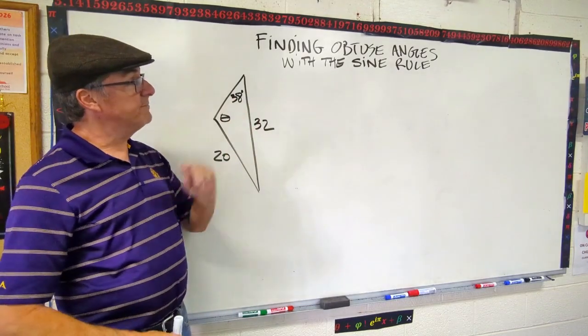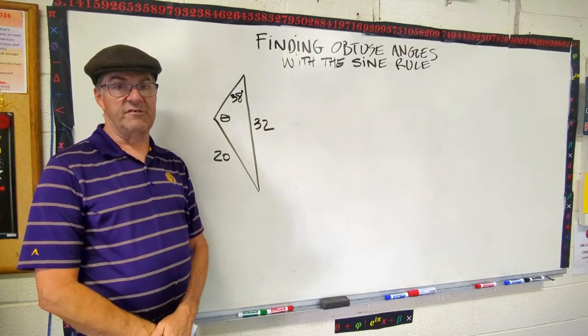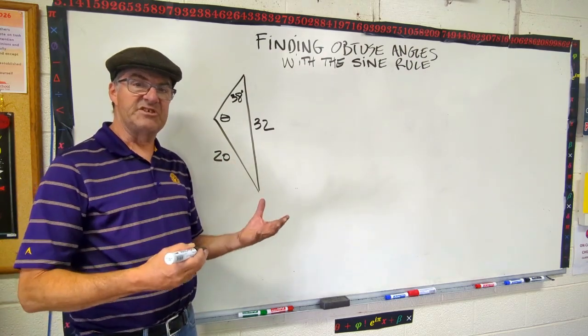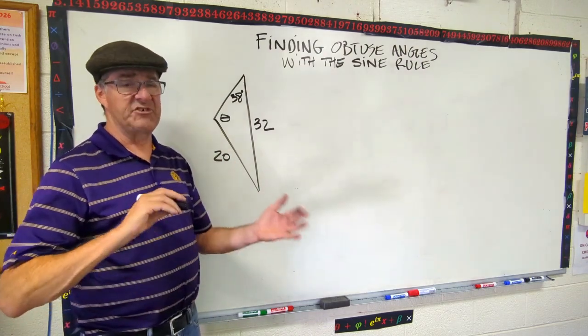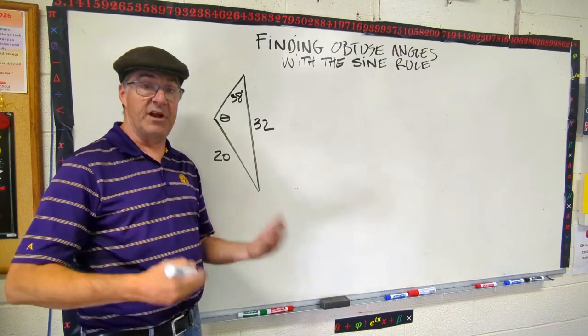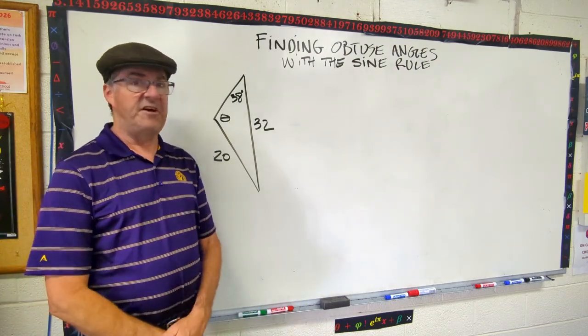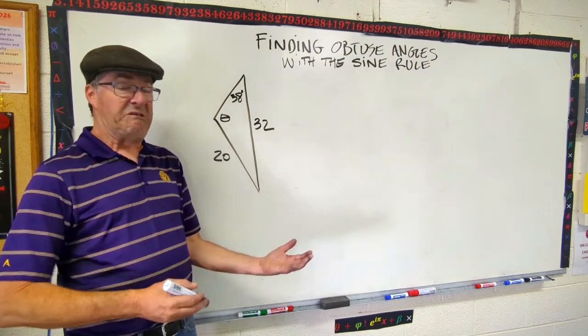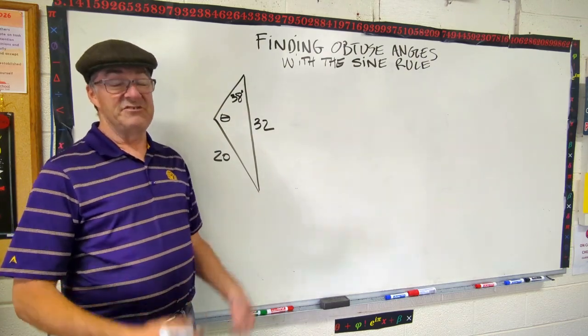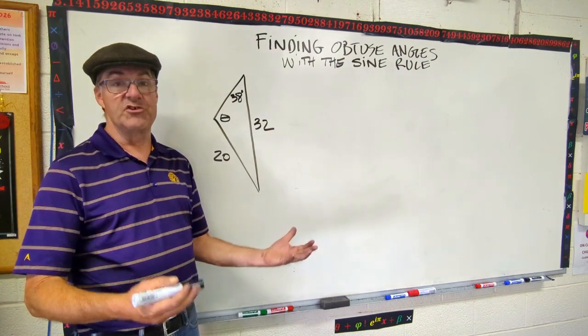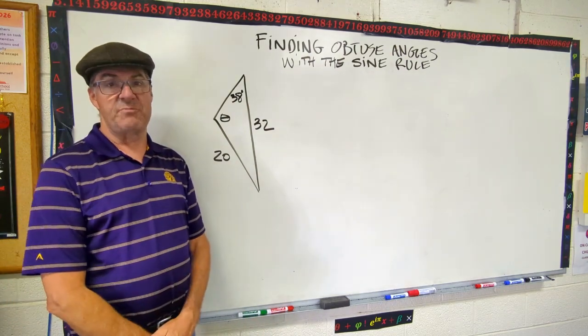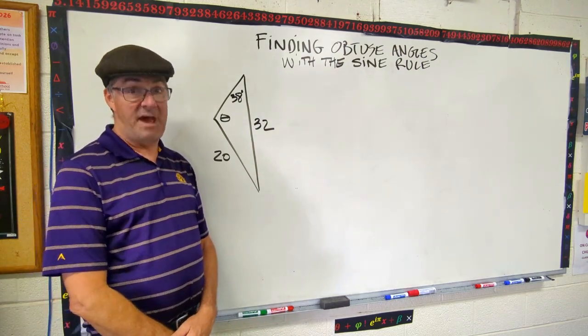Today's topic is finding obtuse angles with the sine rule. Now, you may have already bumped into this issue and it gives you a kind of strange answer. And if you compare with an answer key or the answers in the back of your textbook, you're going to find that your answers aren't correct. But you check your work and it looks like you did everything right. So let's do one of those and then I'll show you why your answer didn't match the back, and I'll show you how to make it match the back.